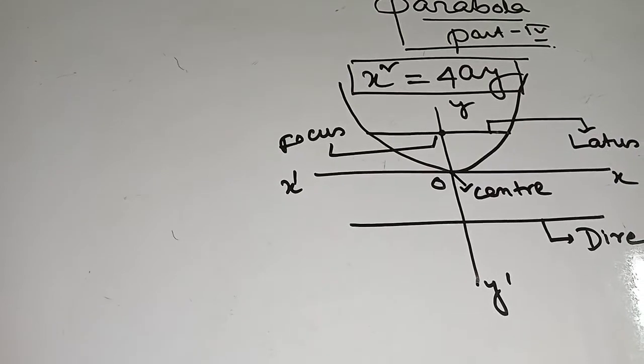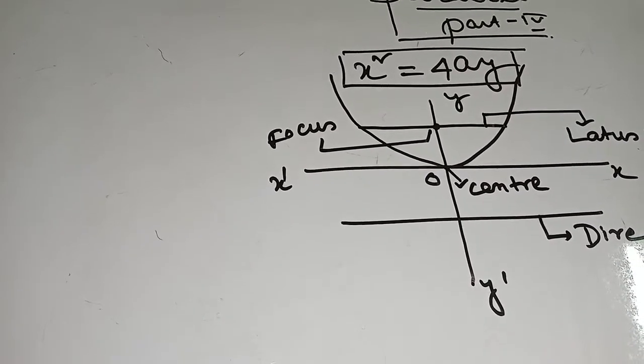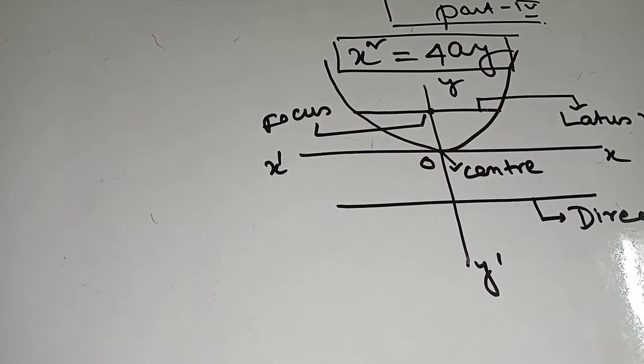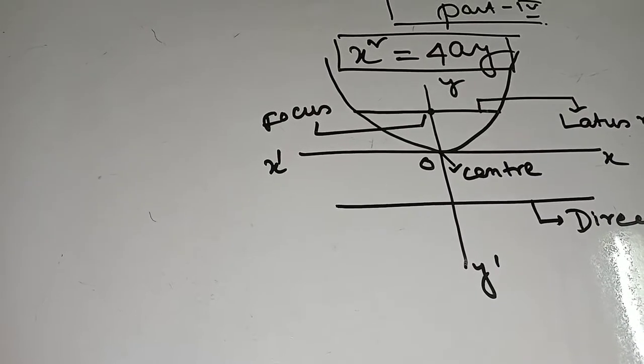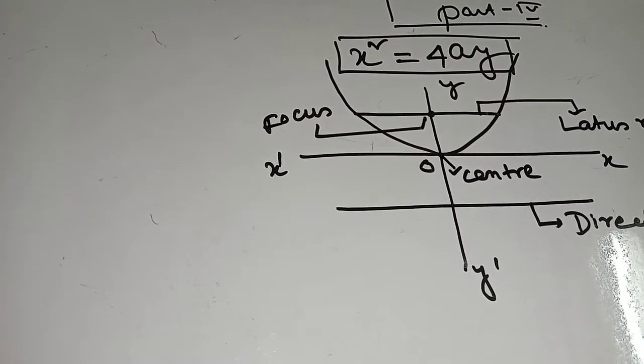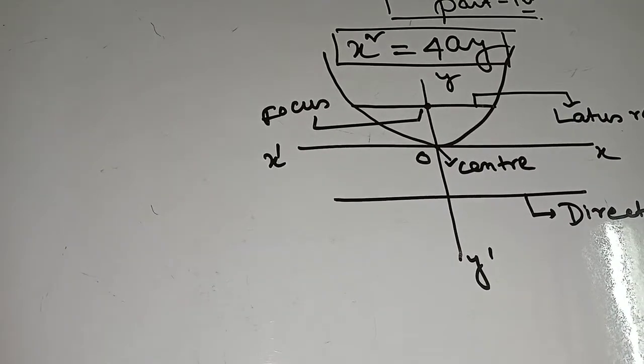The diagram of parabola x square equal to 4y which center is 0, 0. That means parabola passes through the center at 0, 0.